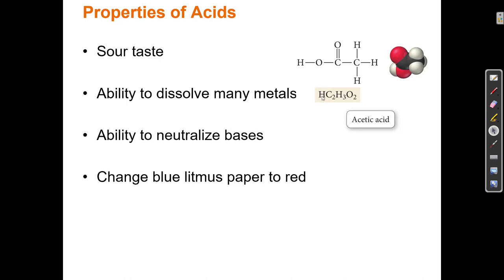Notice that in this compound, there are Hs listed twice. What that's saying is there are two different kinds of hydrogen atoms in this molecule. The H that's at the beginning of the formula always designates the acidic H. Any other Hs in the formula that aren't grouped here at the beginning are not acidic.